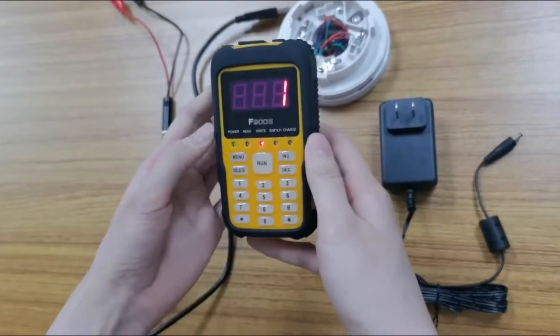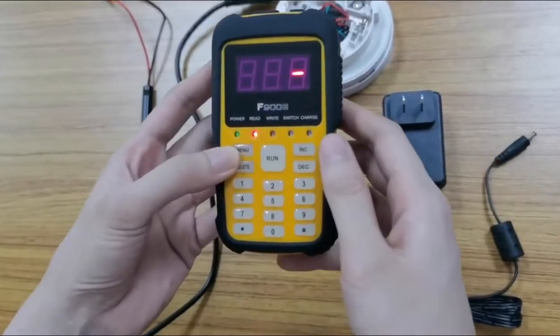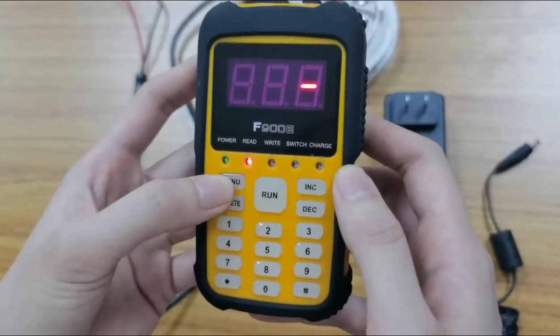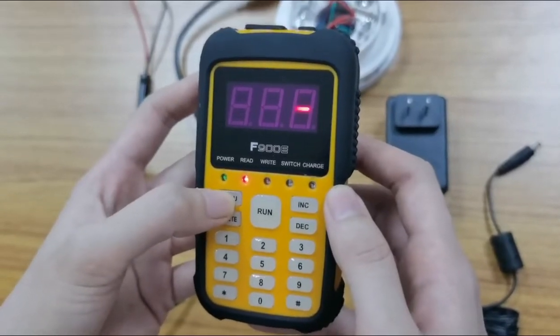First we need to turn on the programmer and you can see it has five lighting indications: power, red light, switch, and charge.